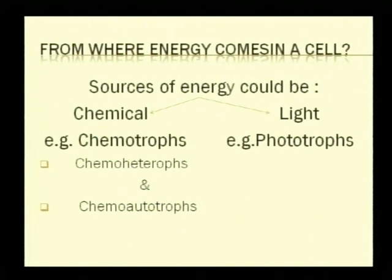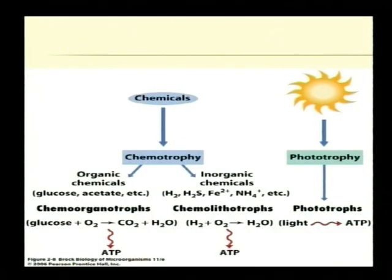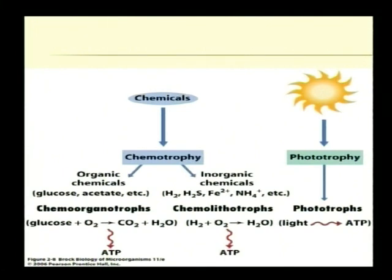From where is energy generated within a cell? The sources of energy for a microbial cell could be a chemical compound. Microorganisms which derive energy from chemical substrates by using chemicals as oxidizable substrates are broadly known as chemotrophs, and those which derive their energy from sunlight are broadly known as phototrophs. Chemical compounds utilized can be organic or inorganic, and accordingly bacteria are classified as chemoorganotrophs or chemolithotrophs.